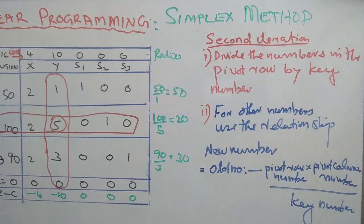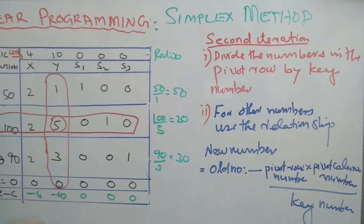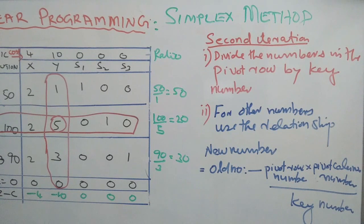We need three terminologies: pivot row, pivot column, and key number. The pivot column is coming in, the pivot row is going out, and this is controlled by the key number. So what is the first step?